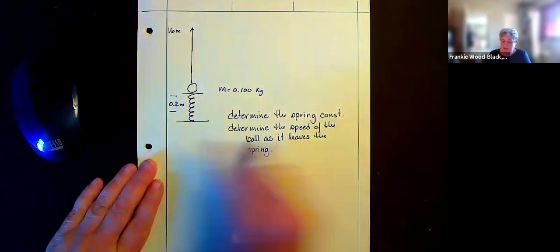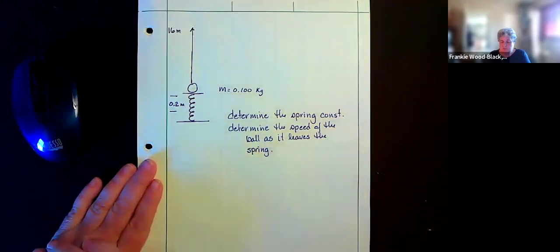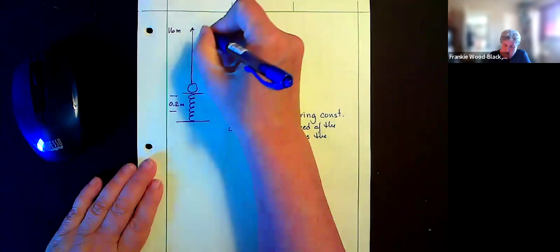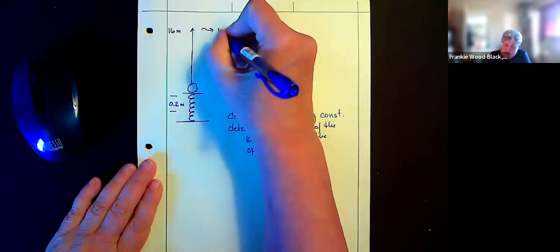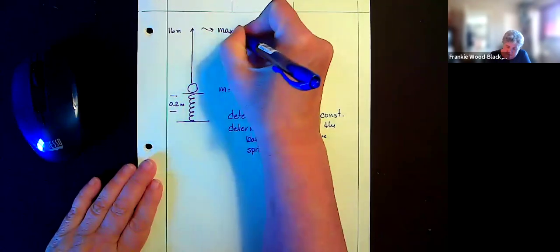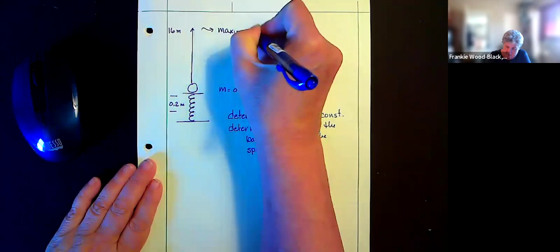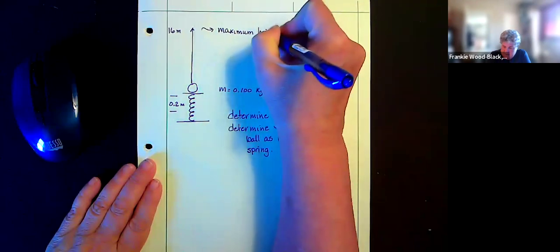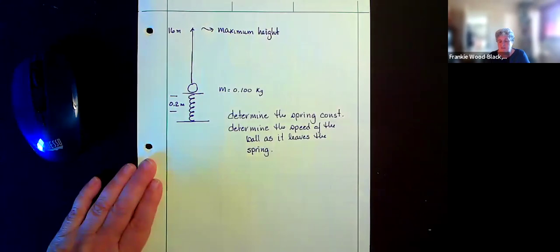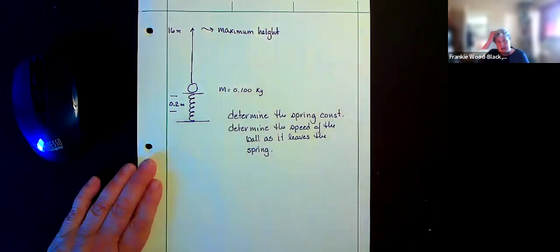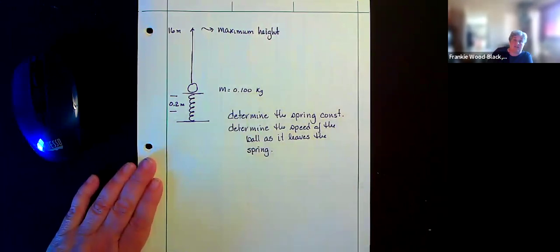So what this is telling us is we've got a few things that we've given information. We've been able to measure the maximum height. We've been given the mass of our object, and this time we're going to have to use the mass of our object. It is a little different than the previous problem, but we're going to have to use it.